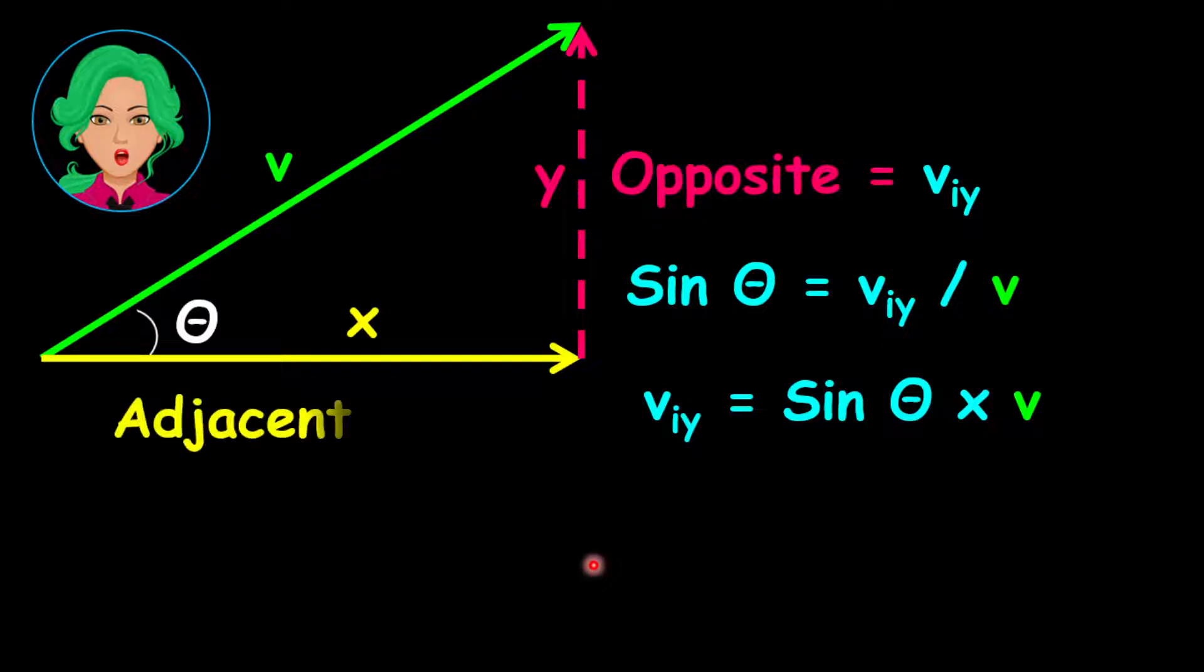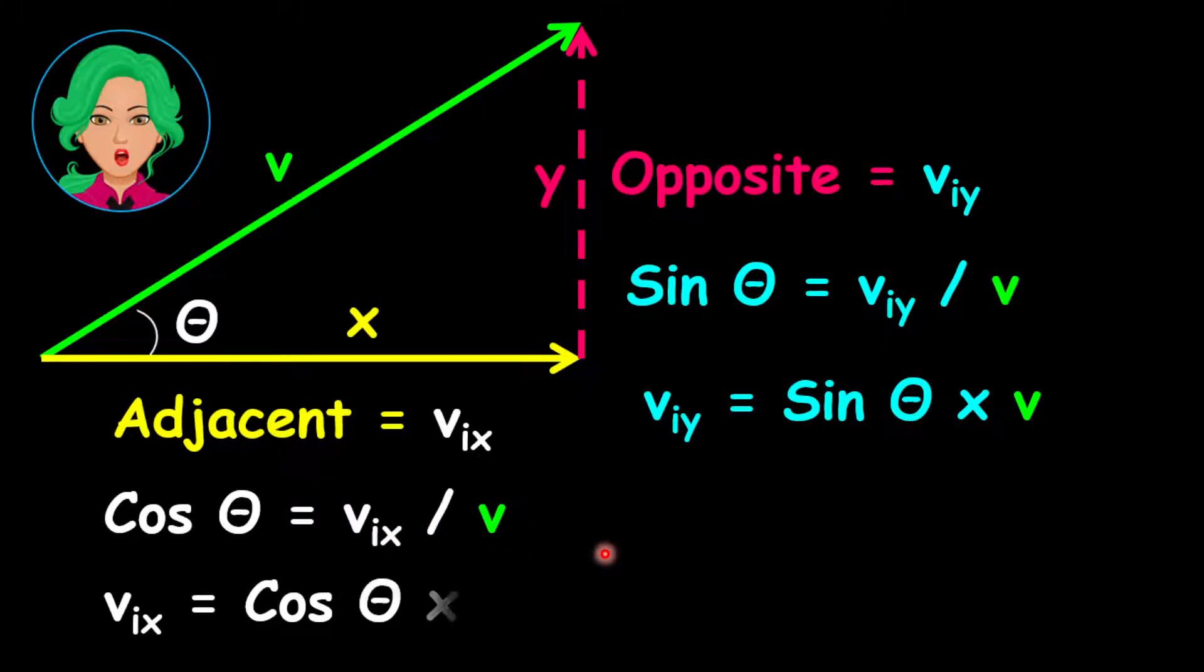Now look at X. X is the adjacent side to the angle. X is the same as the horizontal initial velocity. Remember that the cosine of the angle equals the adjacent side divided by the hypotenuse. Therefore, the horizontal initial velocity, or the X component, equals the cosine of the angle multiplied by V.